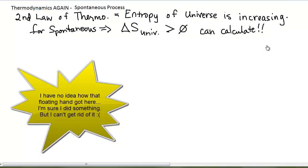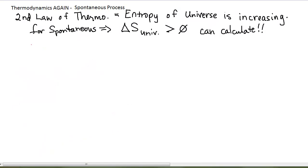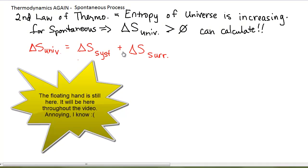What is the entropy change for the universe? The entropy change for the universe can be thought of as the entropy change of the system plus the entropy change of the surroundings. Since the entropy change of the system is not exactly equal to the entropy change of the surroundings, we have to include them both here.